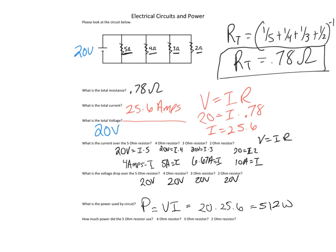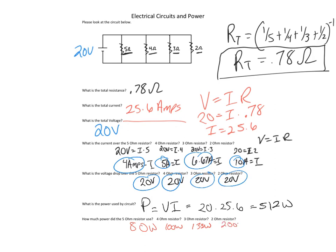How much power did each resistor use? Power equals voltage times current, so: 5-ohm resistor: 4 times 20 equals 80 watts. 4-ohm resistor: 5 times 20 equals 100 watts. 3-ohm resistor: 6.67 times 20 equals 133 watts. 2-ohm resistor: 10 times 20 equals 200 watts.